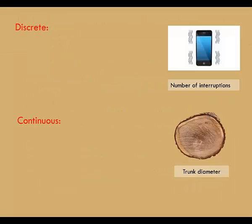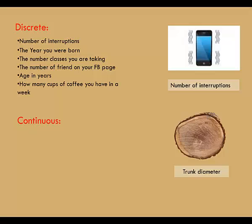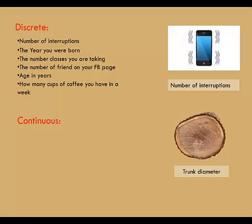The number of class interruptions on a given day could be counted, so that is a discrete quantitative variable. Other examples include the year you were born — consider 1980 and 1981 on a number line. There are lots of numbers between them, such as 1980.2, but you can only be born in a whole year, so it is discrete. So are the number of classes you're taking, the number of friends on your Facebook page, your age in years, and how many cups of coffee you have in a week.